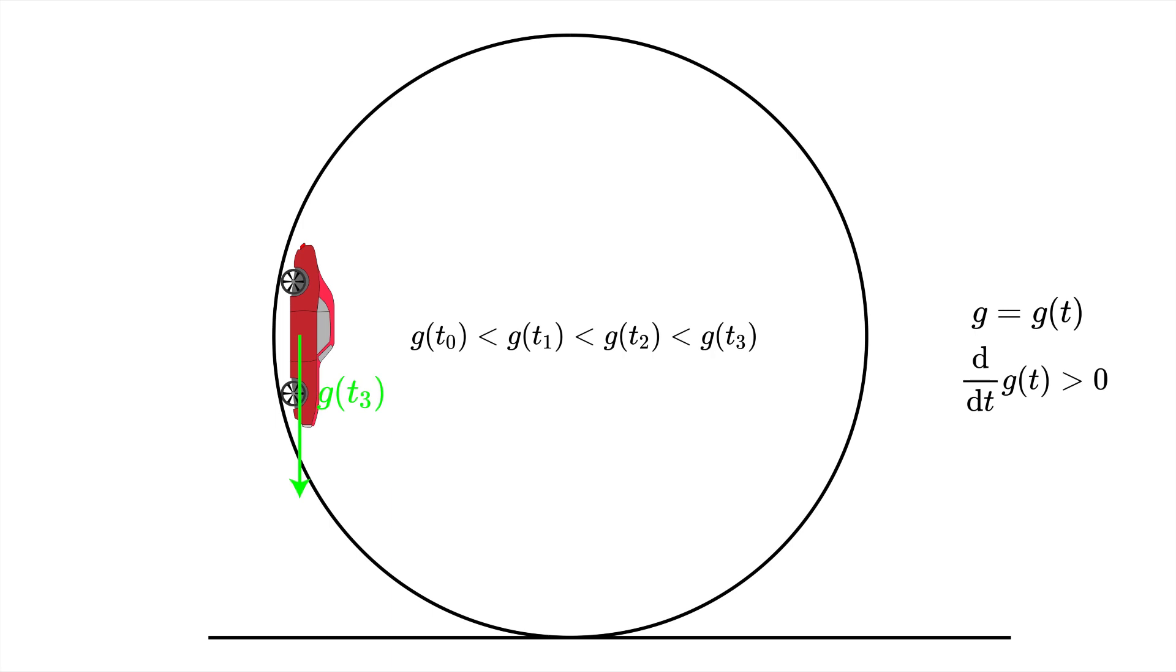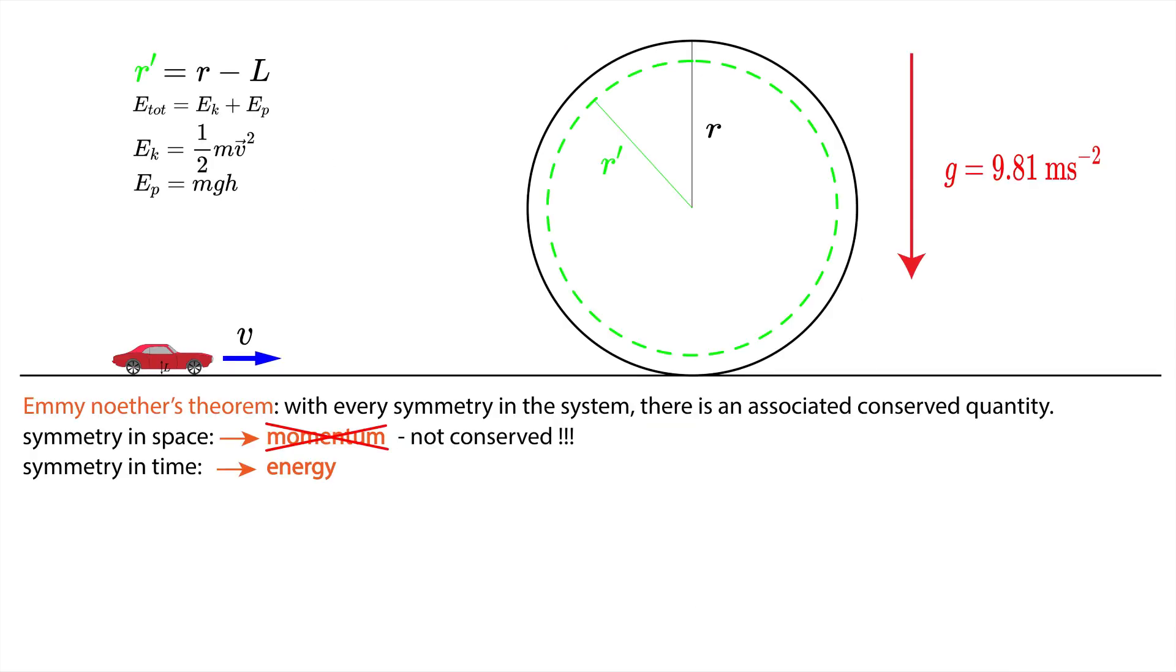This means that we spend much less energy moving up than we got moving down, and we would end up having more kinetic energy at the end than we had at the start. This would mean that the energy is not conserved, but this is not our scenario.